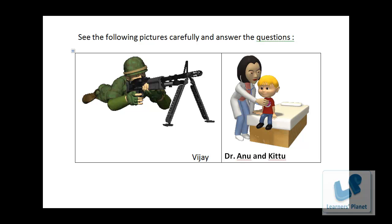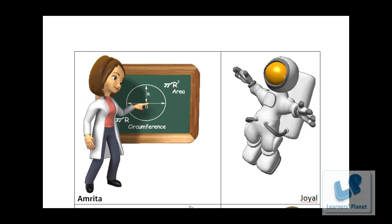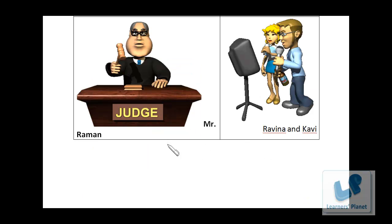This is the very first exercise. See the following pictures carefully and answer the questions. On the basis of these pictures, we are supposed to answer the questions which will follow. We have a soldier named Vijay, a doctor named Anu and a baby boy patient named Kittu, a teacher named Amrita, an astronaut named Joyal, a judge named Mr. Raman, and two singers named Ravina and Kavi respectively.